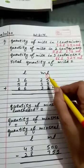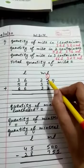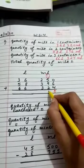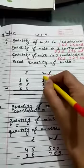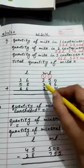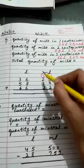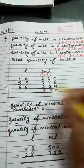9 plus 1 is 10, 10 plus 5 is 15, 15 plus 2 is 17. So 7 and carry 1. 3 plus 3 is 6, 6 plus 2 is 8, 8 plus 1 is 9.